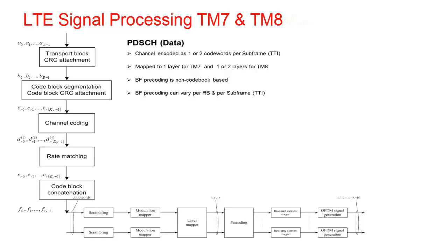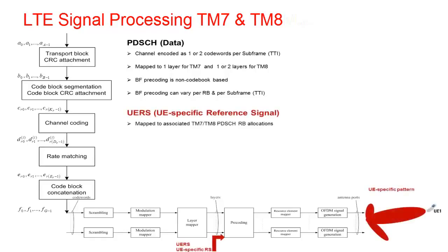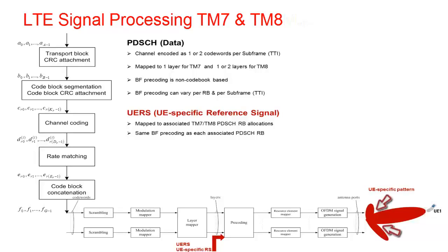For demodulation purposes, transmission modes 7 and 8 include the mapping of UE-specific reference signals within each PDSCH resource block. It is important to note that the UE reference signals undergo the same beamforming pre-coding as the associated PDSCH data, as illustrated on the processing diagram. The beamforming pre-coding is calculated by the base station to ideally maximize the signal-to-noise ratio observed by the target UE device, while the chosen pre-coding will also attempt to minimize transmission interference to other UE devices within the same or adjacent cells.